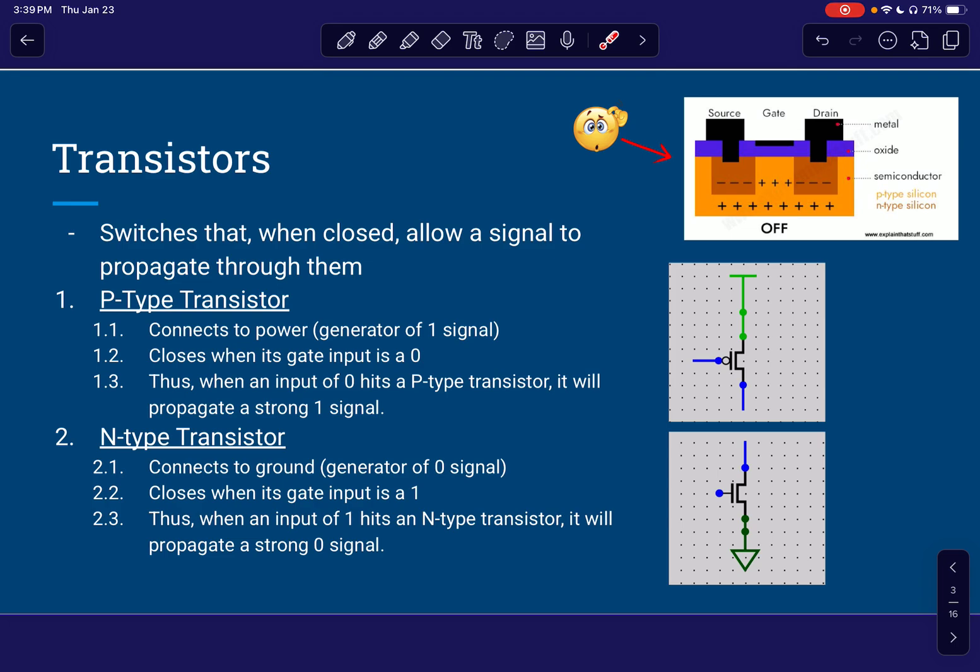So we can think of transistors as switches that, when closed, allow a signal to propagate through them. So up here, top right, is a little diagram I got off the internet, which apparently is what they look like. I don't really understand that. If you have a friend in material science or maybe ECE, maybe they know and they can explain it to you. But I don't know. Pretty much all I care about is the circuit sim representation.